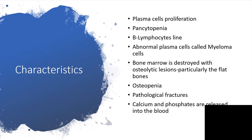Bone marrow is destroyed with osteolytic lesions, particularly the flat bones. The skull, vertebrae, scapula, and pelvis are mostly affected. They have osteopenia. Because osteolytic lesions take place, calcium and phosphorus are pumped out of the bone and released into the extravascular system. This leads to osteopenia and pathological fractures.